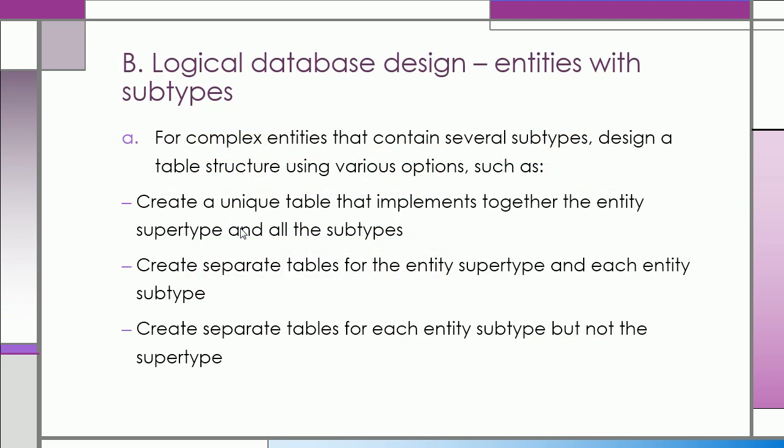On the other hand, for complex entities that contain several subtypes, we design a table structure, using various options such as creating a unique table that implements together the entity supertype and all the subtypes, or we can create separate tables for the entity supertype and entity subtype. Or else, we could also create separate tables for each entity subtype but not the supertype.